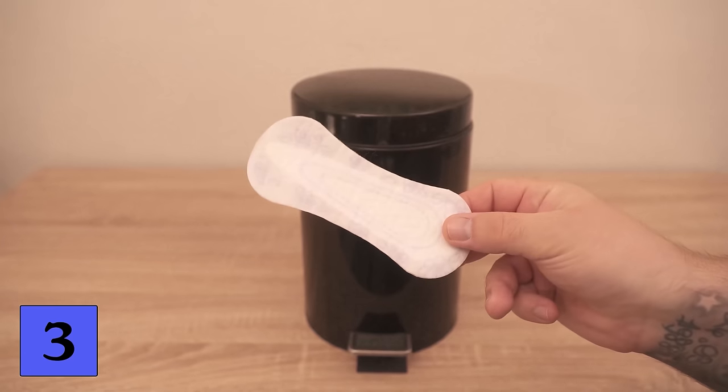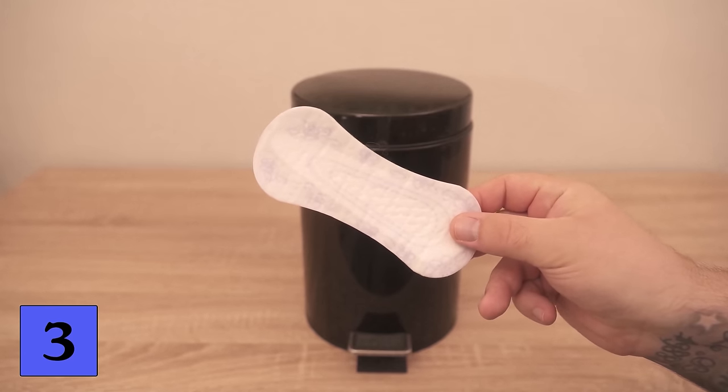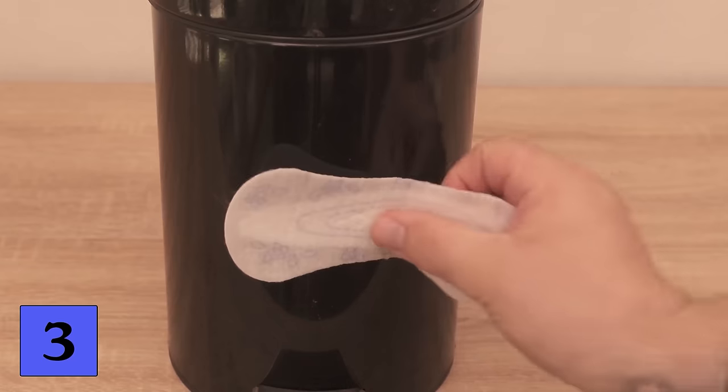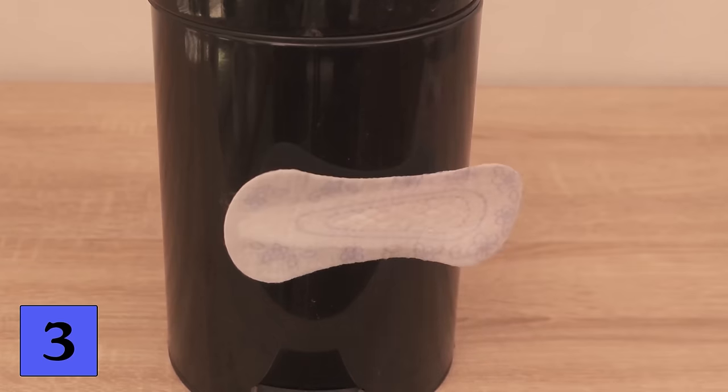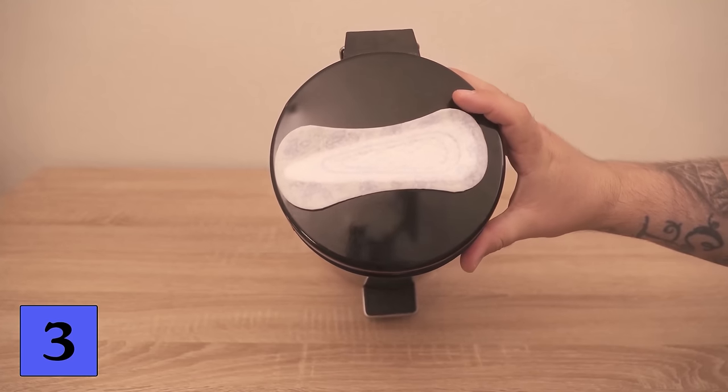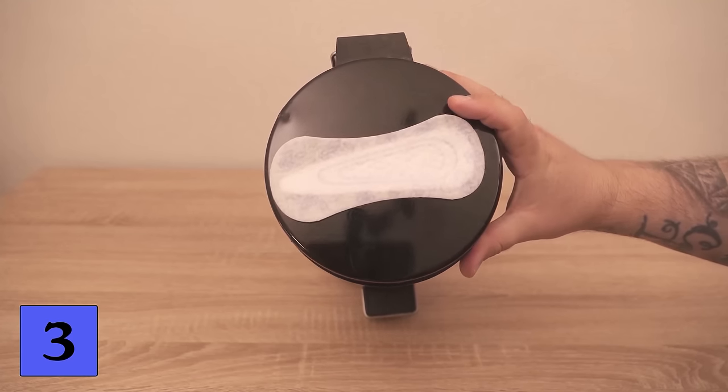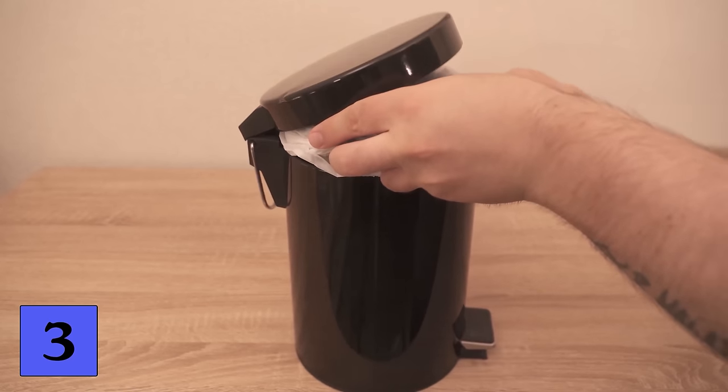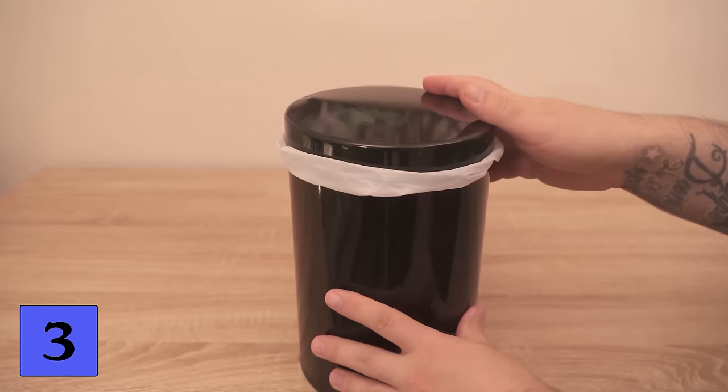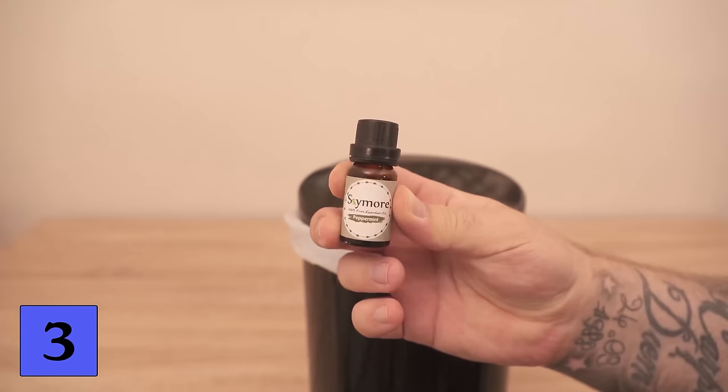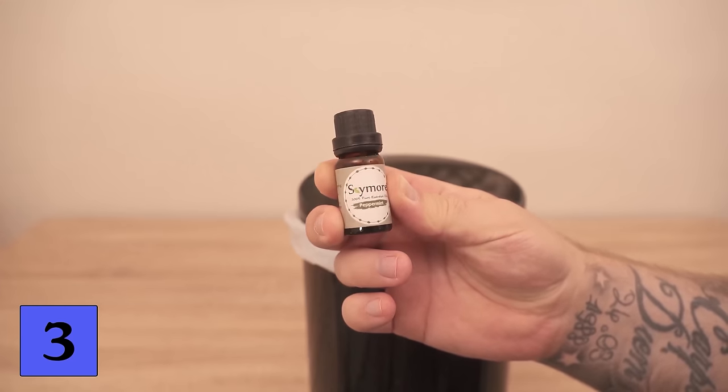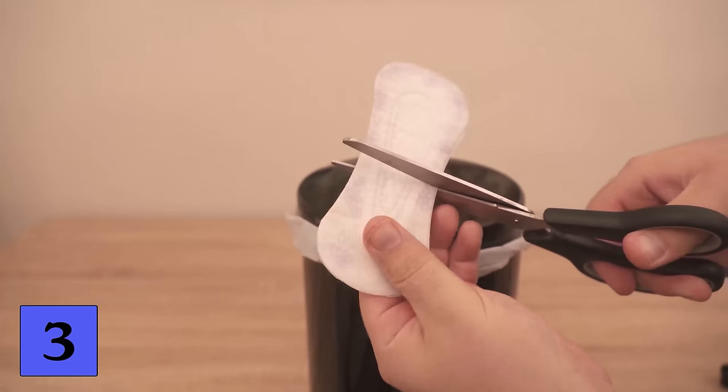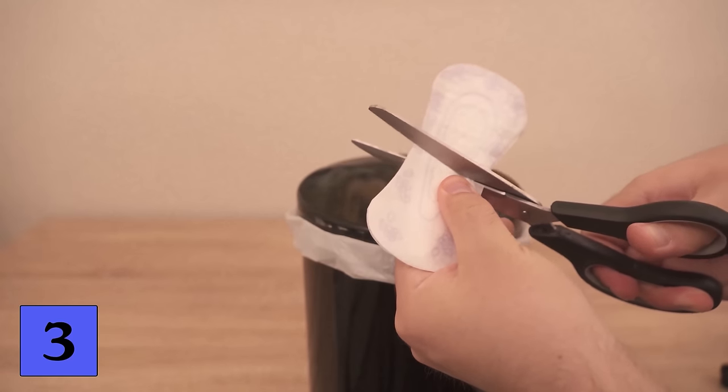For trick number 3 you need a panty liner and your bin. If you stick a panty liner to the bin, you can solve a problem that you know too. But of course you don't want to just stick the panty liner on the front of the bin or on the lid where everyone can see it. I'll show you a variation that's a little more hidden. For this you take the bin, put the bin liner around, and then close it. Now you probably know that if you throw a lot of rubbish in here it will stink at some point.